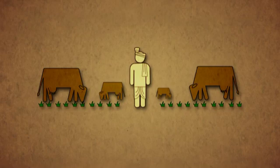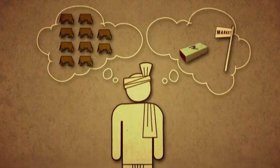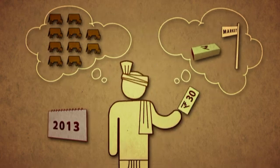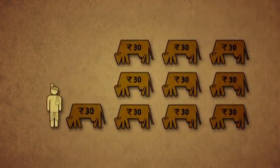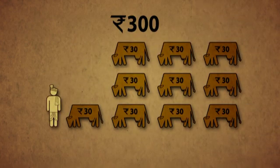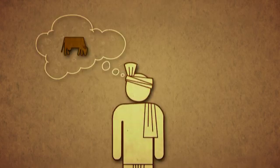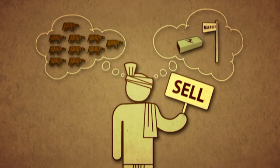My friend Ramu is a farmer who raises cattle. He has 10 cows and wants to sell them in the market one year from now. He knows he will spend 30 rupees per cow to raise them, so his total investment will be 300 rupees. But now he's worried that if another spell of mad cow disease breaks out, he won't get much money for his cattle when he decides to sell them.